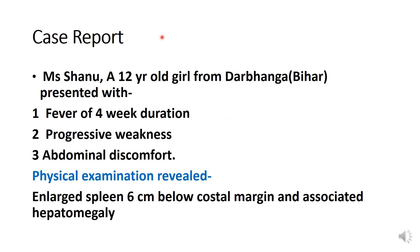First of all, a case report. Ms. Sanu, a 12-year-old girl from Darbhanga, Bihar, presented with fever of 4-week duration, progressive weakness and abdominal discomfort. On physical examination, hepatosplenomegaly was there and spleen was quite large in size and felt 6 cm below the costal margin.